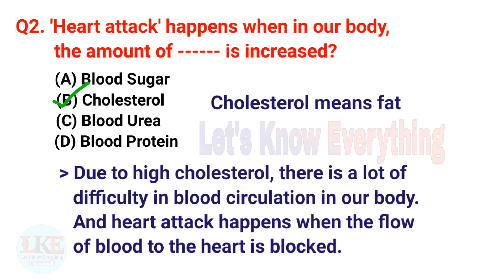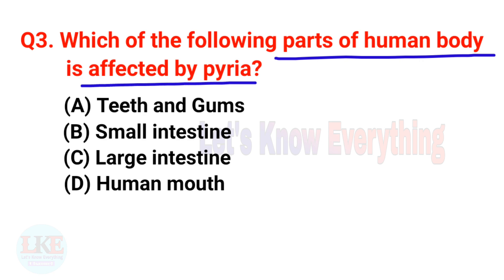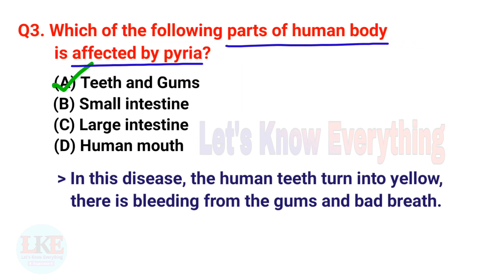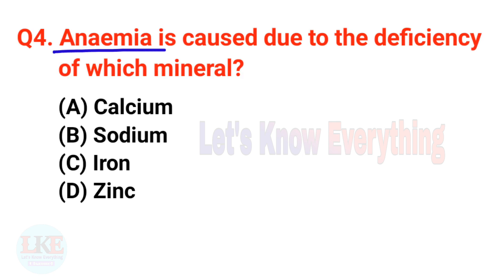Question number three: which part of the human body is affected by pyorrhea? A) Teeth and gums, B) Small intestine, C) Large intestine, D) Human mouth. The right answer is option A, teeth and gums. In this disease, teeth turn yellow, there is bleeding from the gums, and bad breath. Also remember: lack of vitamin C causes bleeding from the gums, and that disease is called scurvy.